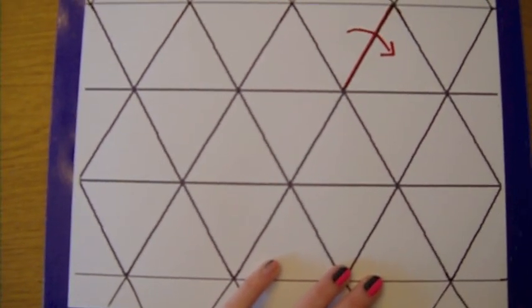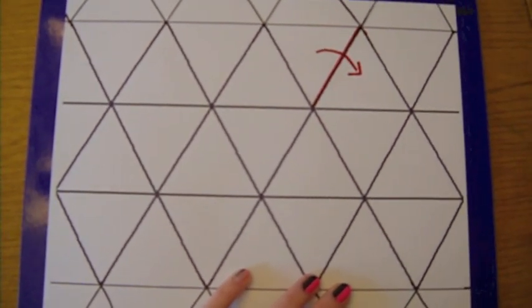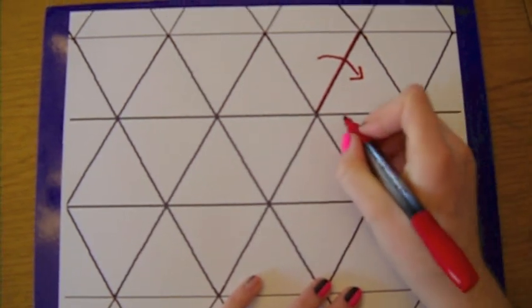This regular tessellation is made up of a series of reflections over many different lines of reflection.